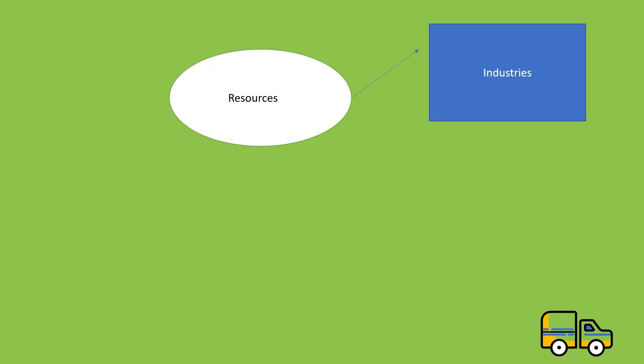Resources, Industries, Product. Industries are located in areas where resources are easily available. These resources are transported from their location to the factory where they are converted into the desired product, which is then transported to the demand location or to the customer. The same is the case with services.